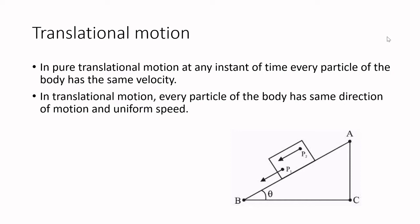So what is pure translatory motion? In pure translatory motion, at any instant of time, every particle of the body has the same velocity. That means every particle of the body has the same direction of motion and same speed.